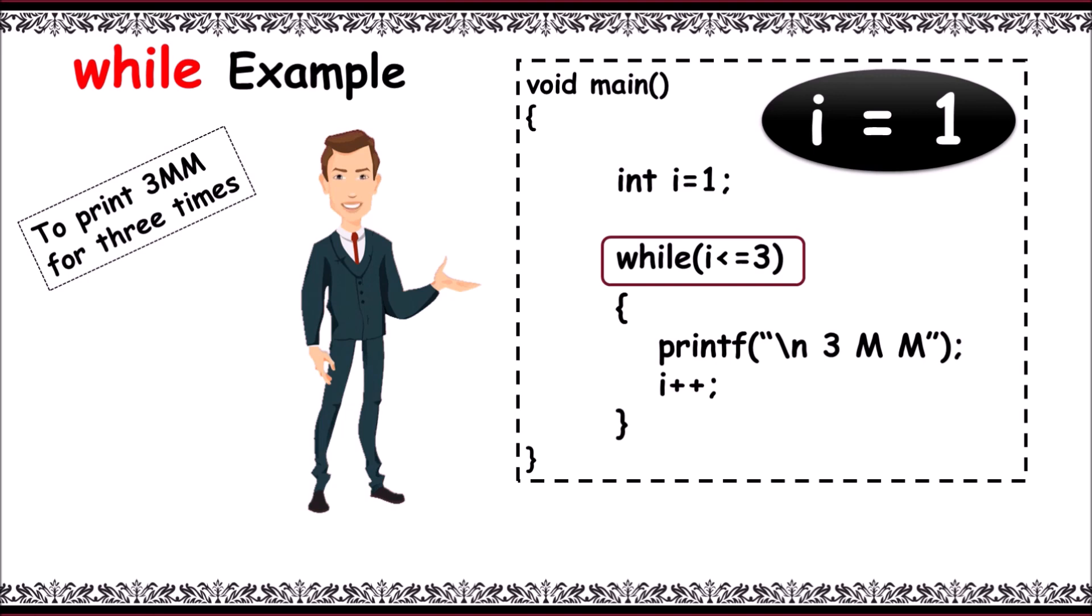As the condition is true, it prints 3mm for the first time and then i value is incremented. With i plus plus, now i is equal to 2.